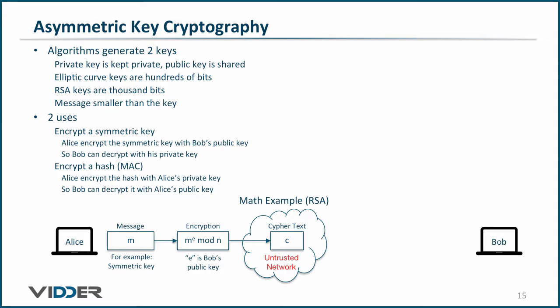At the other side, Bob decrypts the message by multiplying the ciphertext times itself D times modulo N, where D is Bob's private key. The result is the original message, which is the symmetric key that Alice can use to send a number of encrypted messages to Bob.